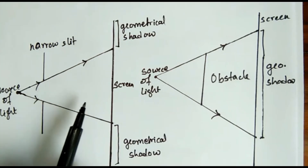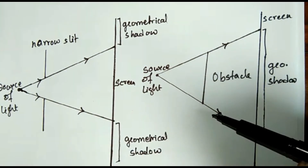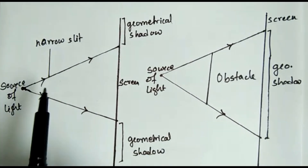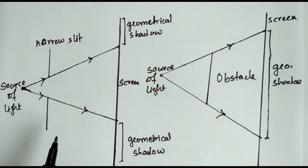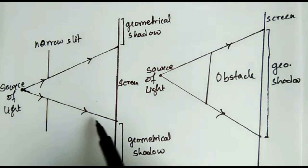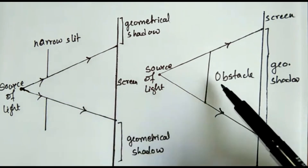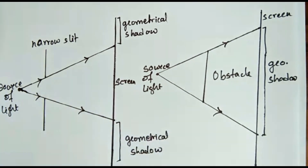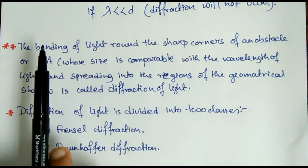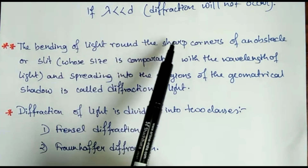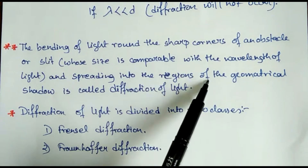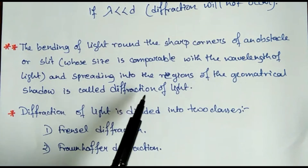When the beam of light falls on the sharp edge of the obstacle or narrow slit, and the size of the obstacle is comparable with the wavelength of light, there is a departure from straight-line propagation and the light bends round the corners of the obstacle or slit. So, the definition of diffraction of light is: the bending of light round the sharp corners of an obstacle or slit whose size is comparable with the wavelength of light, and spreading into the regions of the geometrical shadow, is called diffraction of light.